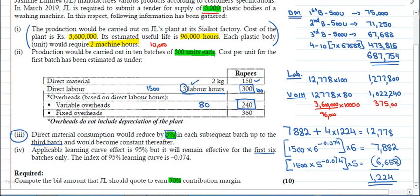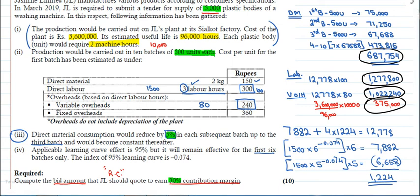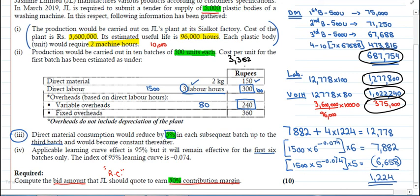Now if we talk about fixed overheads - see, the question asked to compute the bid amount that JL should quote to earn 30% contribution margin. In the relevant costing chapter, you'll learn that when a bid comes, the fixed costs are not relevant for us. Which means total amount: 687,754 plus 1,277,800 plus 1,022,240 plus 375,000. So our total cost amount is coming to approximately Rs. 3,362,794. Another reason not to consider fixed cost is that they asked for 30% contribution margin.